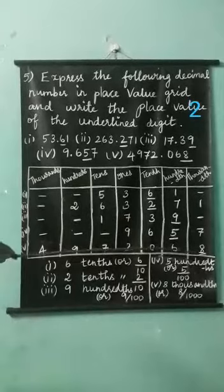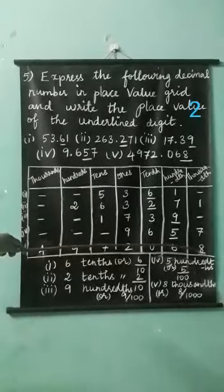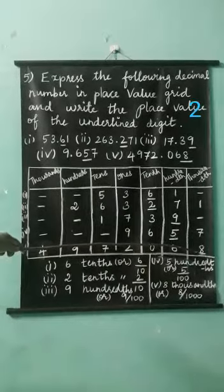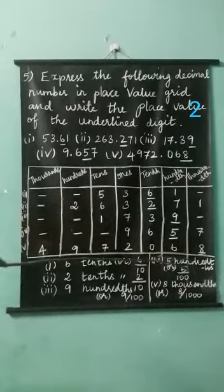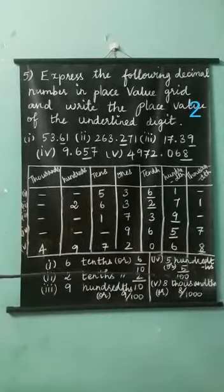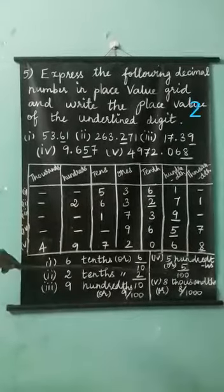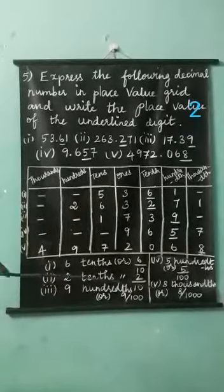See the last number. Where is the underlined number eight? That place is thousandth place, so we write eight-thousandths or eight by thousand.